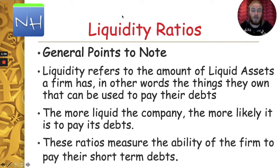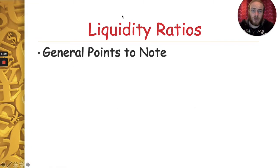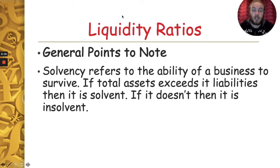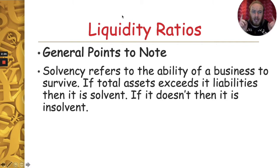The liquidity ratios we look at examine the ability of the firm to pay its short-term debts - in other words how well the business is able to pay what it owes when it has to be paid. Another word you might hear a lot is solvency. Solvency is basically how a business can survive and it looks at assets and liabilities. Assets are what a business owns; a liability is what it owes. If a business has more assets than liabilities then it is solvent. If a business becomes insolvent, that means its liabilities are bigger than its assets - it owes more money than it's able to pay back.